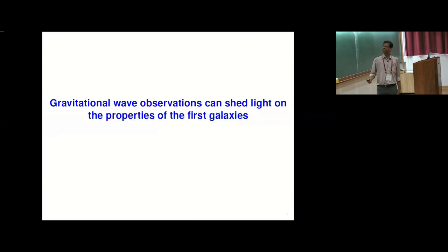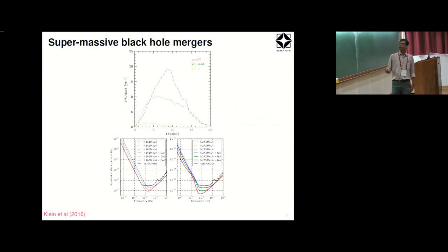Now to the second message that gravitational wave observations can shed light on the properties of the first galaxies. This is something which is well known, that for example the space-based missions like LISA will probe the mergers of supermassive black holes which are residing in the centers of the galaxies. To see what kind of events will be interesting for LISA, people have gone ahead and modeled these mergers. This shows the merger rate as a function of redshift and you can see the merger rate peaks around very high redshifts, around redshifts of 10 to 15, and that's basically when the first galaxies are forming and hopefully these are the events which will be interesting for LISA. Once you start detecting them you plan to start understanding about what happened to the universe at these stages.